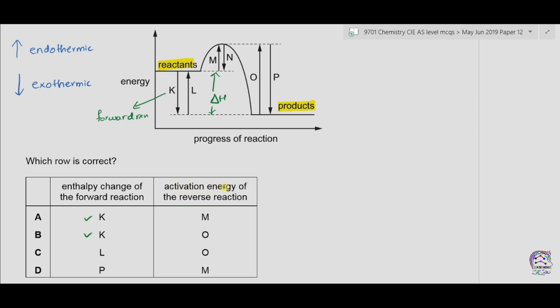The second point is the activation energy of the reverse reaction. In the reverse reaction, the products must absorb this much energy in order to convert back into the reactants. Therefore O shows the activation energy in the reverse direction. The arrow of activation energy is always in the upward direction, so O is correct. The correct option is B.